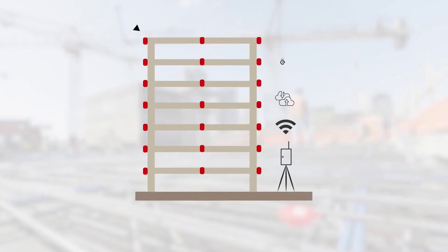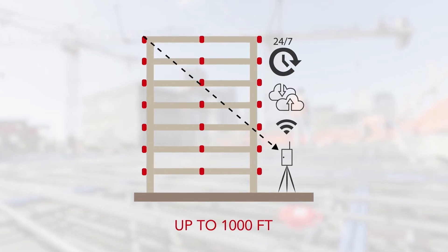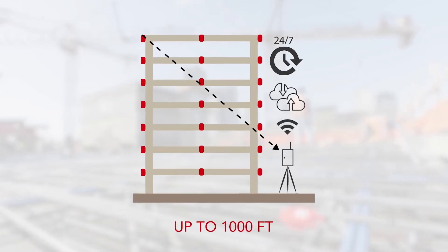If using a T2 sensor and LoRa gateway, the data collection is continuous for all sensors within up to 1,000 feet from a linked gateway.